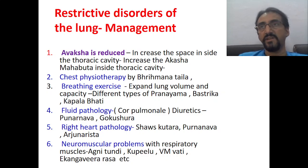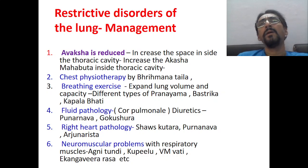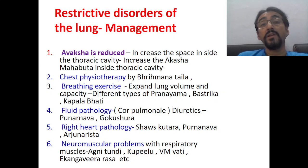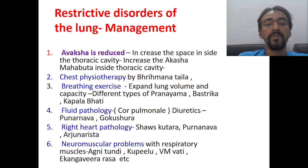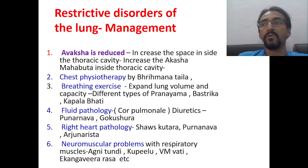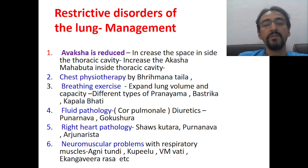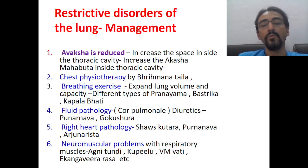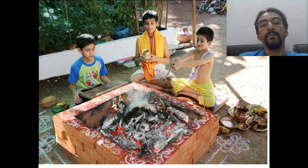If fluid pathology is causing restriction, diuretics should be used — punar nava, gokshura, punar nava arishta, and other mutrala drugs. If there is right heart pathology leading to restrictive lung disorders, shwasankuta rasa, punar nava mandura, or arjuna arishta can be given. If neuromuscular problems are the cause — respiratory muscles undergoing atrophy or accessory muscles of respiration not moving — neuromuscular treatment can be given with drugs like agnitundi rasa, which increases contraction and relaxation of skeletal muscles, along with kupilu, vishama ushtivati, and kangavi rasa.